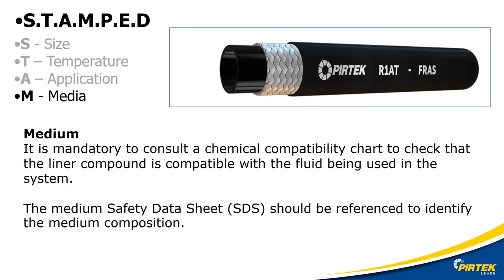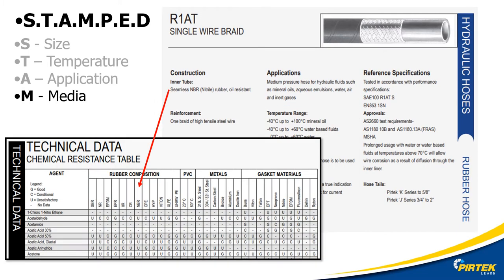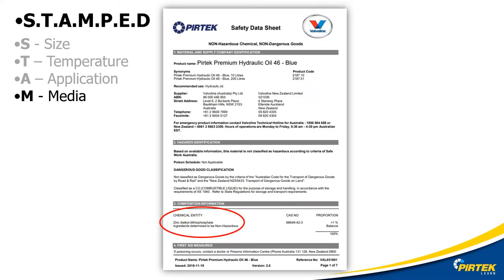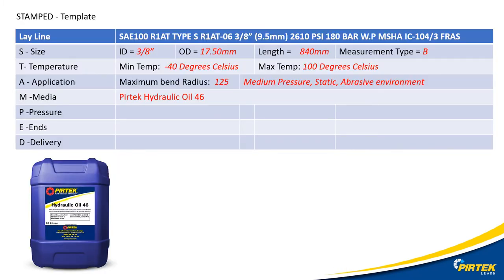STAMPT M is for media. We need to check and make sure that the media we're transferring in our hose is compatible with the hose material. Information on the media can be obtained from the safety data sheet. We will be using Pertec hydraulic oil number 46. I get the hose liner type from the hose data sheet and the active ingredient from the safety data sheet for the hydraulic oil, and I'll cross-reference these on the chemical resistance table supplied by Pertec. I follow the MBR liner material down to the active ingredient and I get a G — G is good. I add the media details to my stamp template.